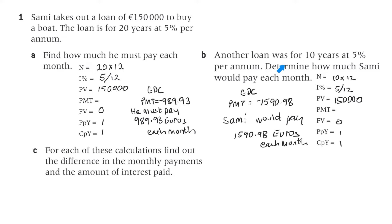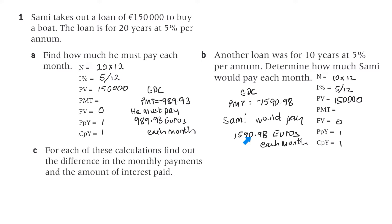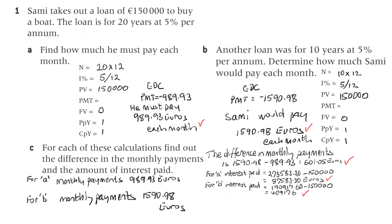Part B: another loan was for 10 years at 5% per annum. Determine how much Sammy would pay each month. N is 10 times 12 for the periods. The interest rate is 5% per annum divided by 12, and 150,000 is the present value. The calculator gives a payment of 1,590.98 euros each month.